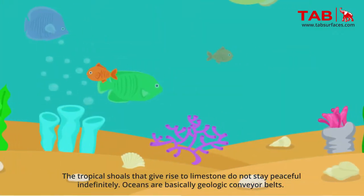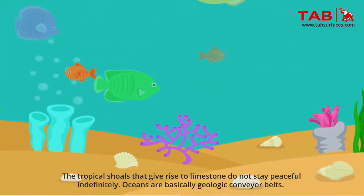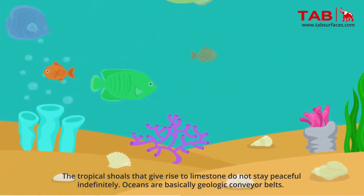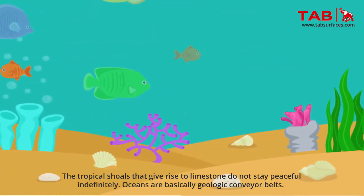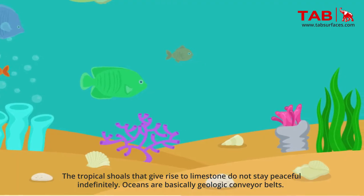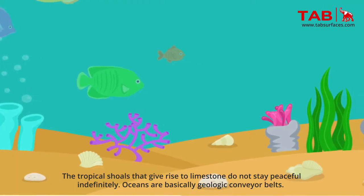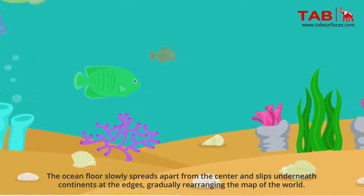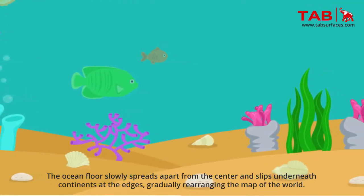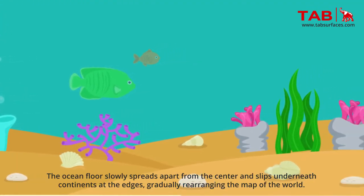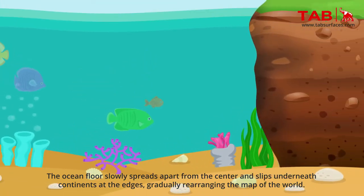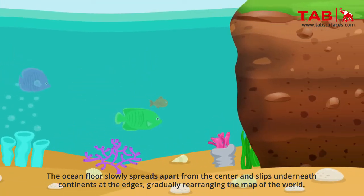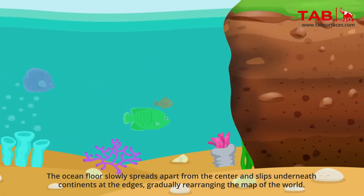The tropical shoals that give rise to limestone do not stay peacefully indefinitely. Oceans are basically geologic conveyor belts — the ocean floor slowly spreads apart from the center and slips underneath continents at the edges, gradually rearranging the map of the world.